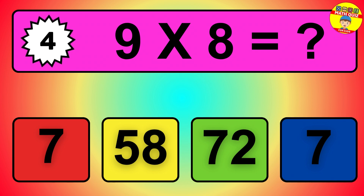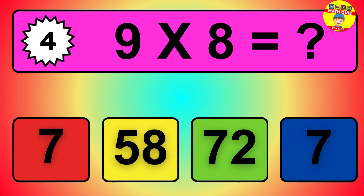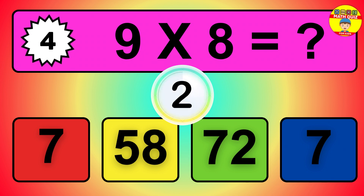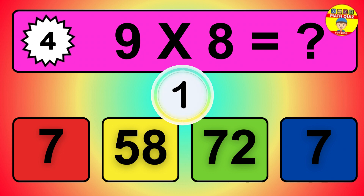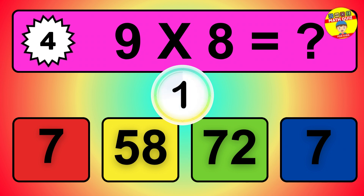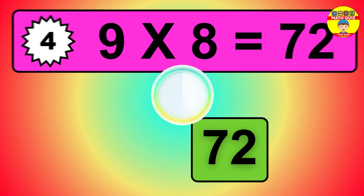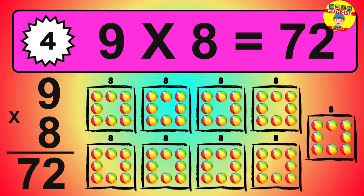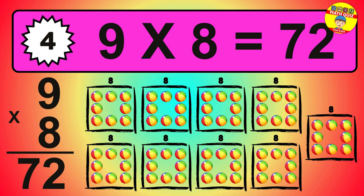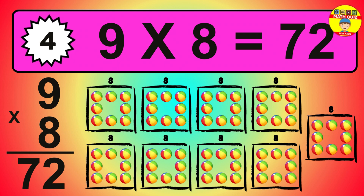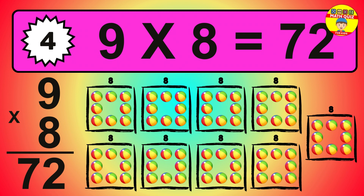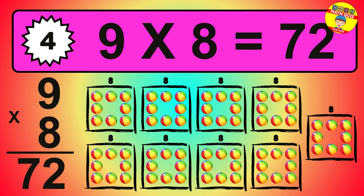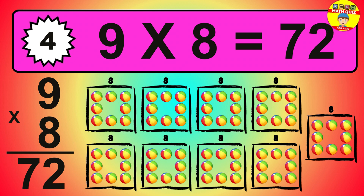Question 4. 9 times 8 equals what? The answer is 9 times 8 is 72. To calculate, we have 9 groups with 8 balls each one. So how many balls do we have? 72 balls.